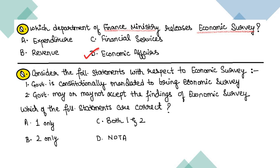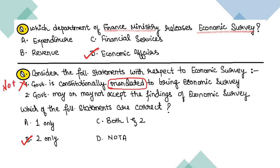Consider these statements about the economic survey: First, the government is constitutionally mandated to bring the economic survey. Second, the government may or may not accept the findings of the economic survey. Statement 1 is wrong — the government is not constitutionally obligated to bring the economic survey. Statement 2 is correct. Correct option is B.